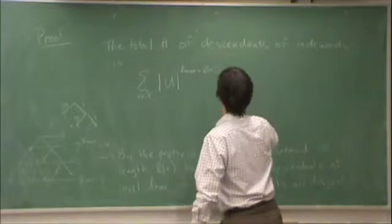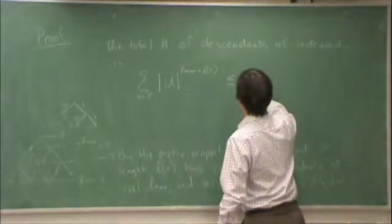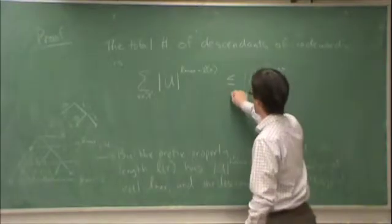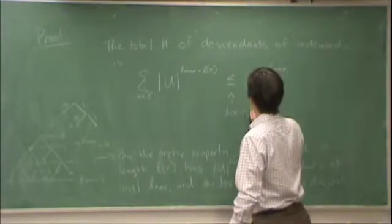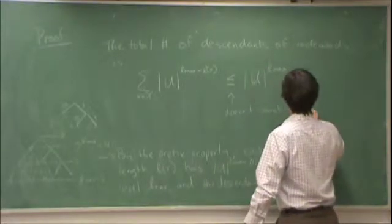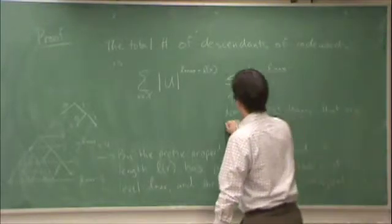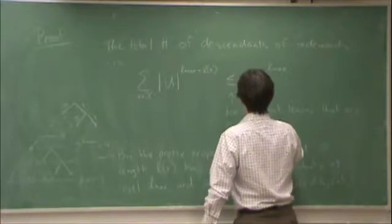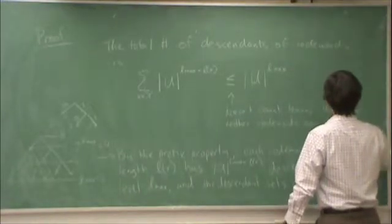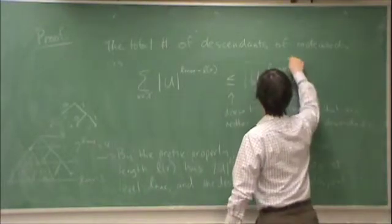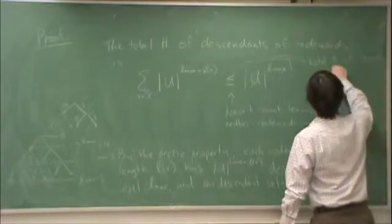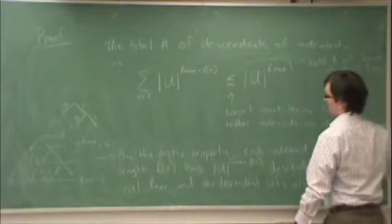So therefore, this must be less than or equal to the total number of descendants at the bottom level. It's less than or equal because it doesn't count leaves that are neither codewords nor descendants. And this is the total number of leaves at level Lmax.